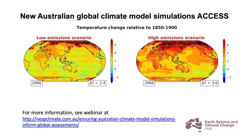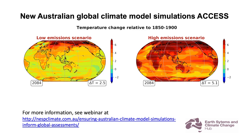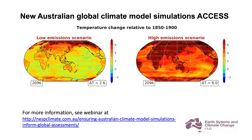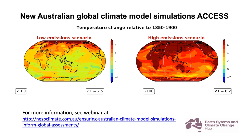The 2100 simulation for the high emission scenario shows warming across essentially all land masses greater than six degrees — greater than six degrees over Australia. In the Arctic it's showing warming of 10 degrees or higher. The low emission scenario shows some Arctic warming of the order of six degrees, but fortunately when we look at Australia in the low emission scenario, the warming is actually only around three to four degrees. So that's much better than six degrees, but it is still substantial.